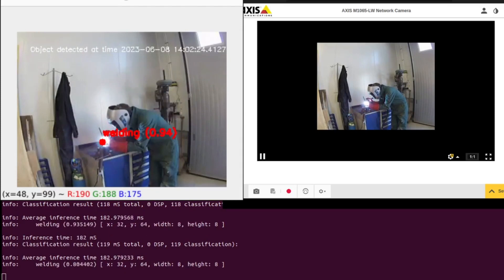With the second model we are detecting when someone is welding and as you can see whenever the welding stops we start getting the no objects found messages at the bottom.